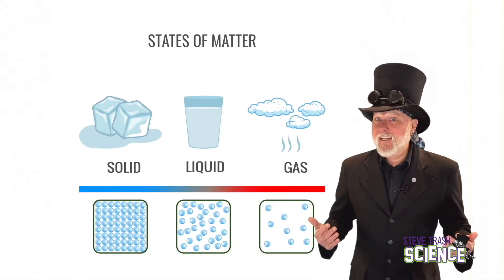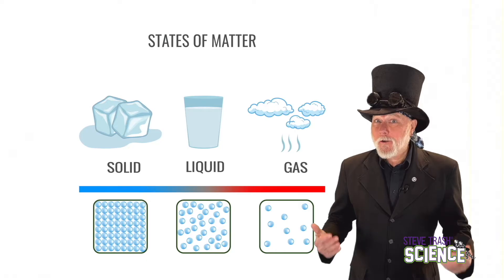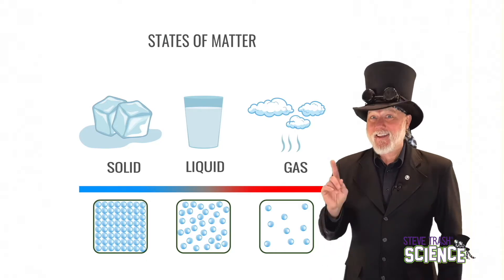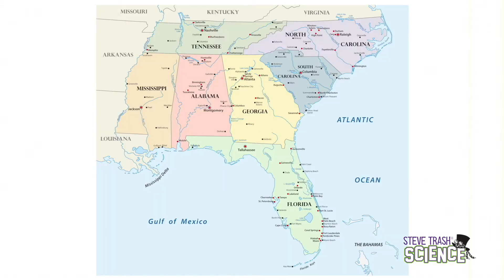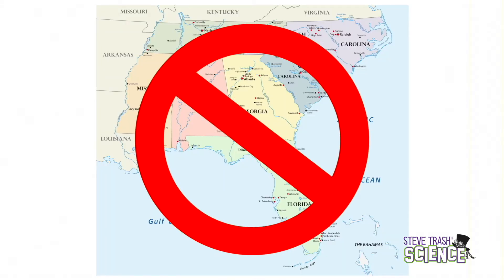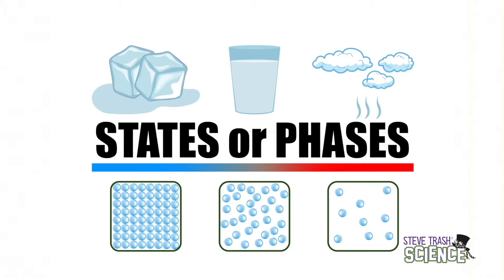Three common states of matter are solid, liquid, and gas. Like this water, for example. It looks like a glass of water, but it isn't just water — it can exist in three different states. I don't mean states like Alabama, Georgia, or Mississippi. I mean physical states or phases.